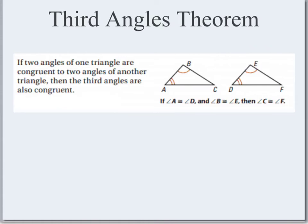The last theorem we have to talk about is the Third Angles Theorem. This simply says if two angles of one triangle are congruent to two angles of another triangle, then the third angles are also congruent. We have a quick proof: we know that the measure of angle A plus the measure of angle B plus the measure of angle C has to equal 180.